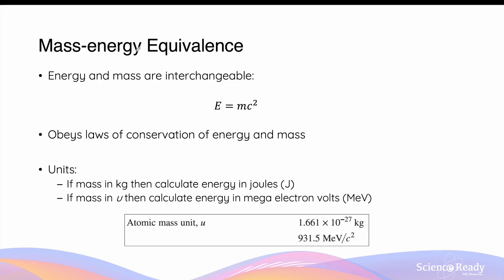Albert Einstein's mass-energy equivalence principle states that energy and mass are interchangeable. Einstein proposed an equation, E equals mc squared, to link the quantities of energy and mass. The mass-energy equivalence principle also obeys the laws of conservation of energy and mass.